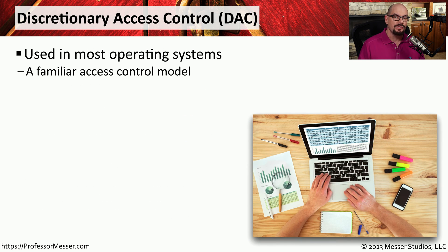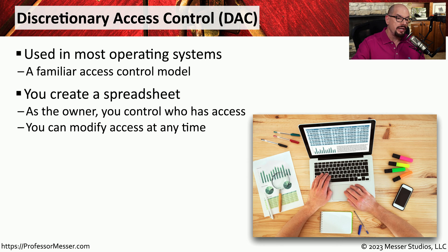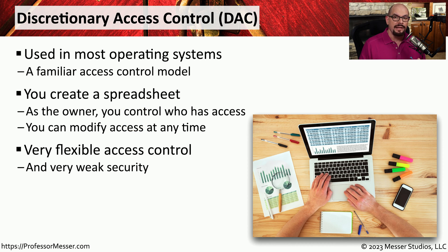One very common type of access control is a discretionary access control. With a discretionary control model, the user that creates the data has control over who can access the data and how they can access that information. For example, if you create a spreadsheet, you get to decide who else has access to that spreadsheet. You can also set different permissions for users, where some people can modify the spreadsheet and others might be read-only. Unfortunately, this level of access is also less secure because you're relying on each individual user to set the appropriate security controls for every piece of data they create.